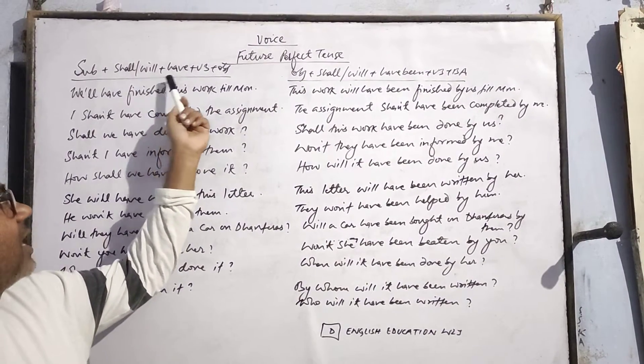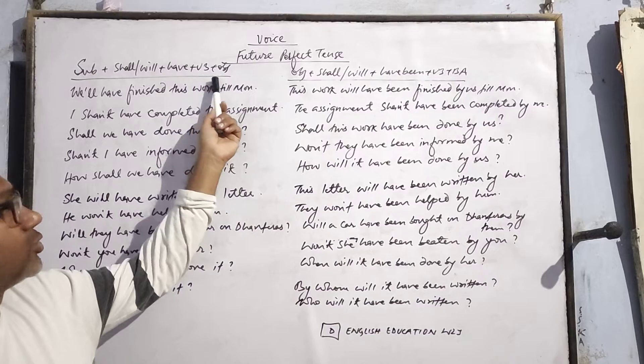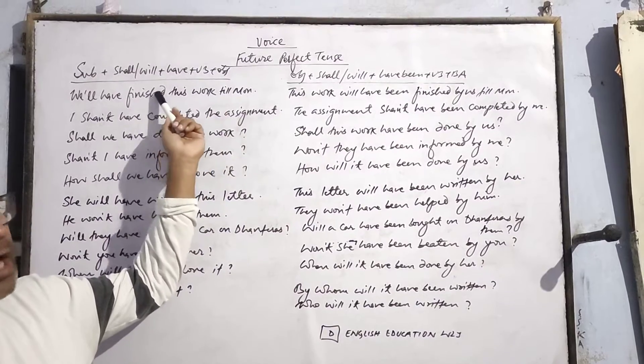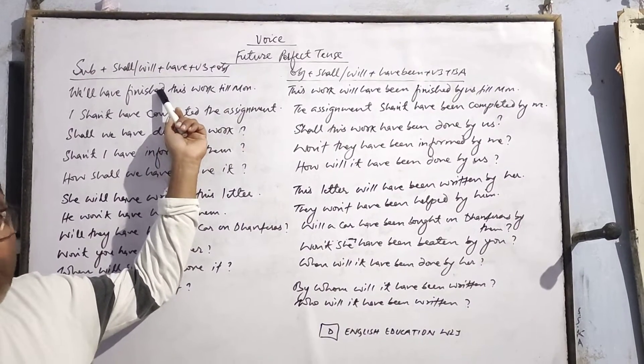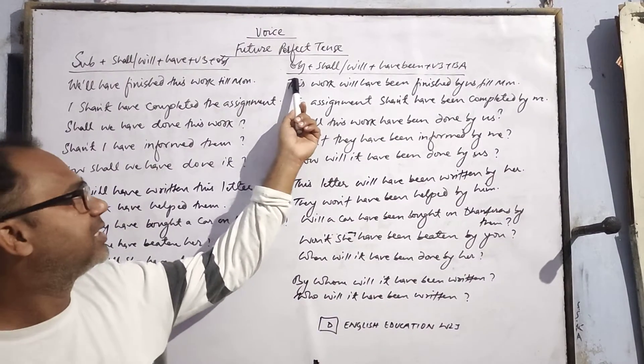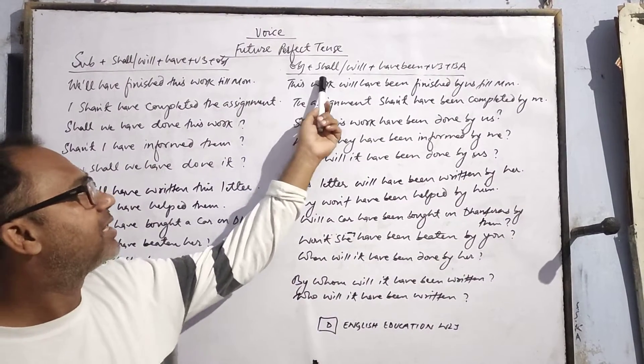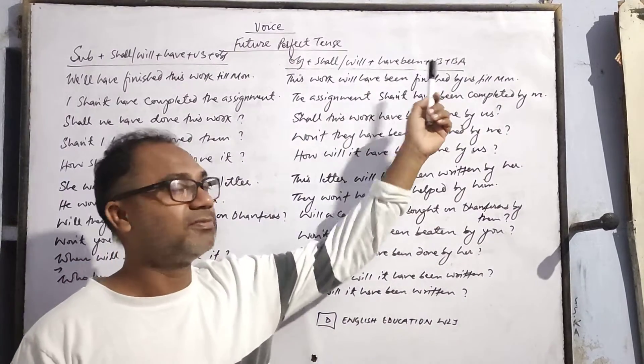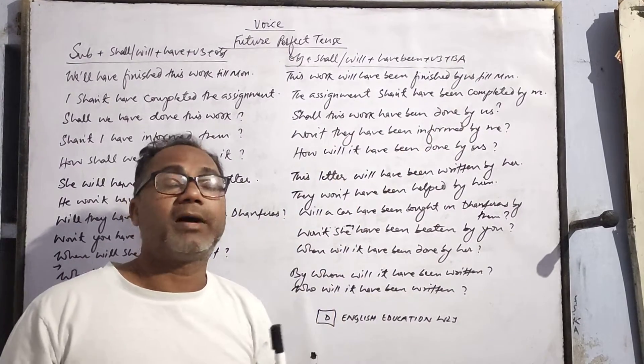In active: Subject + will have + V3 + object. In passive: Object + will have been + V3 + by + subject.